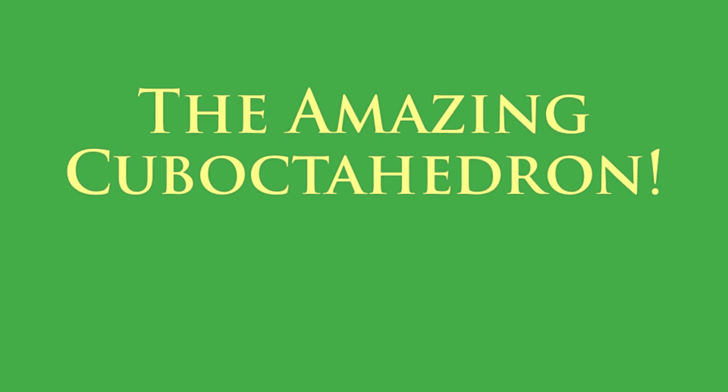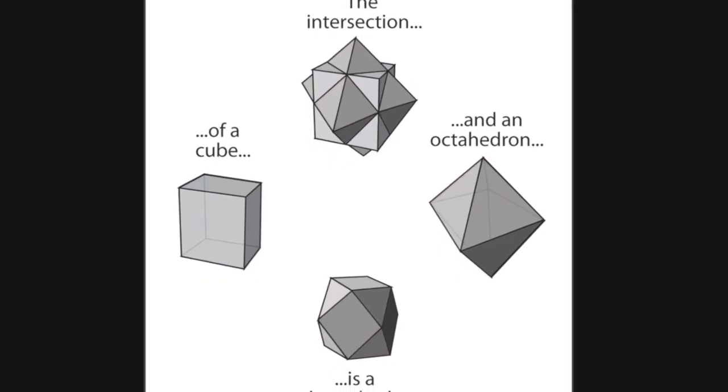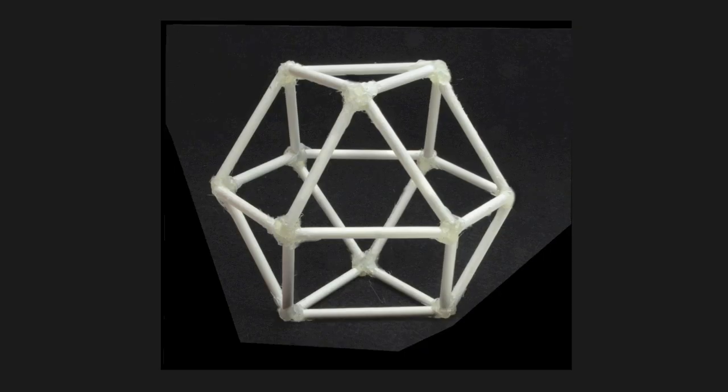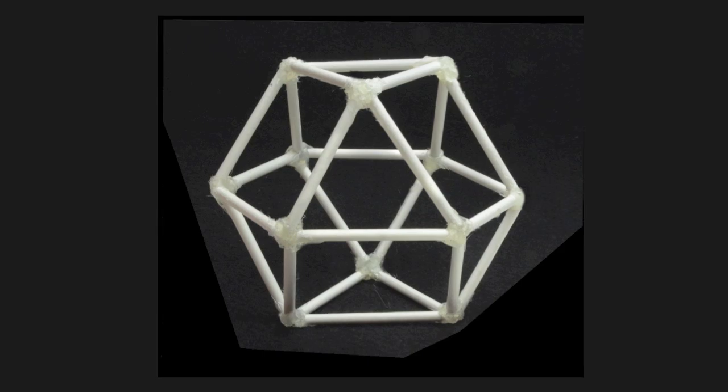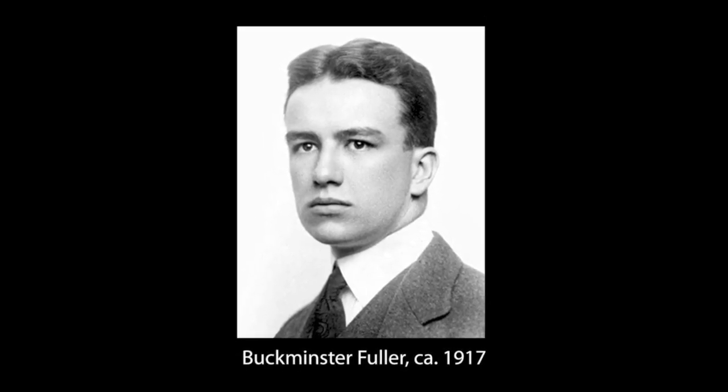The second kit is called the amazing cube octahedron. Just as it sounds, the cube octahedron can be made by combining a cube and an octahedron and then cutting off all the pointy stellations. But the great geometer Buckminster Fuller felt the cube octahedron was much more important than just an intersection of shapes.